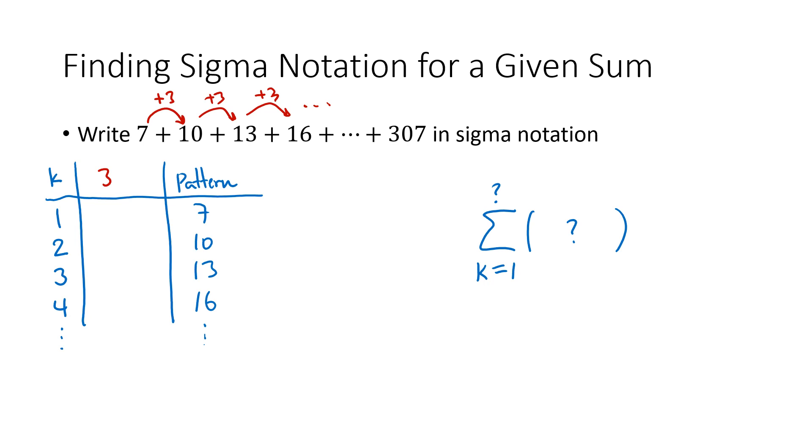Well, a pattern that would work for that part of my pattern would be to simply multiply k by 3. 3 times 1 is 3, 3 times 2 is 6, 3 times 3 is 9, 3 times 4 is 12, and so on. So this middle column has that right pattern but it's not the right numbers. I've got 3, 6, 9, 12 rather than what I want which is 7, 10, 13, 16.